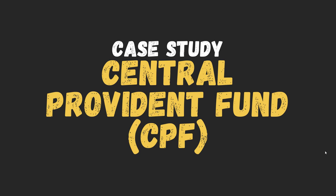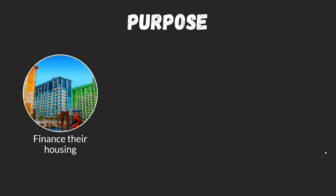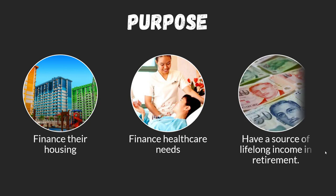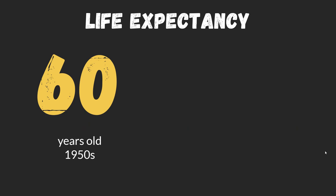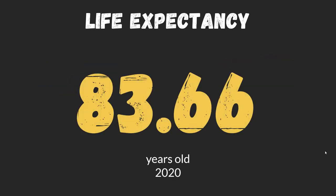Another example is the Central Provident Fund (CPF), which helps Singaporeans prepare for retirement and other needs such as financing housing, healthcare through MediShield, and providing a source of lifelong income. In the 1950s, Singapore's life expectancy was about 60 years. As Singapore became more affluent with access to better healthcare, by 2015 average life expectancy rose to 82 years, and by 2020 it was 83.66 years — placing Singapore among the top 10 countries with the highest life expectancy in the world.